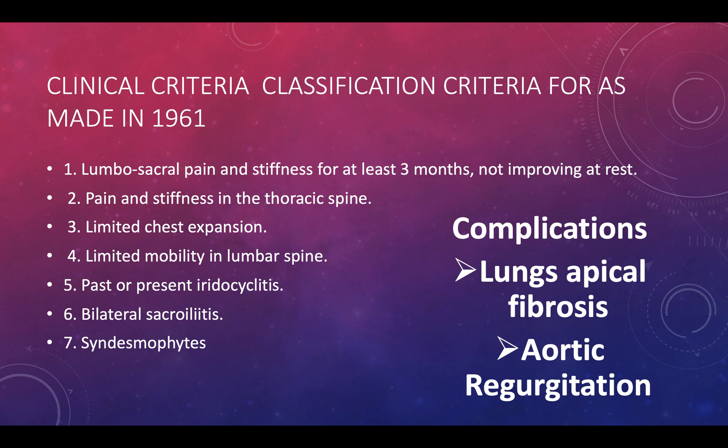Complications of ankylosing spondylitis include lung apical fibrosis due to limited chest expansion — the inspiratory and expiratory muscles are not working adequately, so fibrotic changes occur within the lung. There can also be aortic regurgitation.